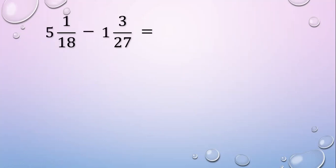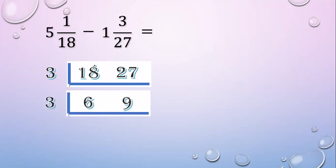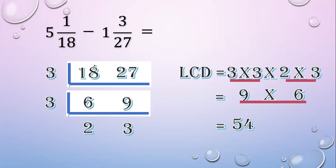Another example. 5 and 1 over 18 minus 1 and 3 over 27. First, get the LCD: 18, 27. Divide by a prime common factor of 3. 18 divided by 3 equals 6; 27 divided by 3 equals 9. Then 6 and 9 have a common factor, so divide by 3. 6 divided by 3 equals 2; 9 divided by 3 equals 3. LCD equals 3 times 3 times 2 times 3. 3 times 3 equals 9; 2 times 3 equals 6; 9 times 6 equals 54. The LCD equals 54.